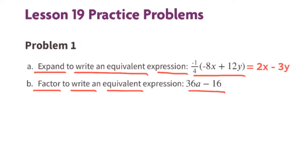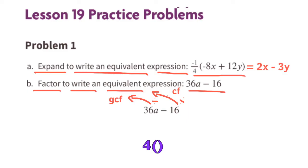Part b: factor to write an equivalent expression. We look for a common factor to write outside a set of parentheses. Looking at the two terms 36a minus 16, I think 4 is the greatest common factor, so I put a 4 on the outside of the parentheses. 4 times 9a equals 36a, so the first term inside the parentheses will be 9a.